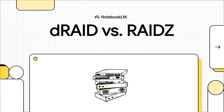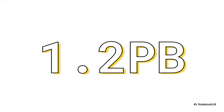Let's just jump right into it. We're looking at a pretty high-stakes decision here — choosing between two really complex storage technologies, DRAID and RAID-Z. This isn't just about picking something from a menu. It's about understanding what you're really betting on when things inevitably go wrong. And the reason this is such a big deal starts with this number: 1.2 petabytes. That's what you get when you pack a 60-bay server with giant 20-terabyte drives.